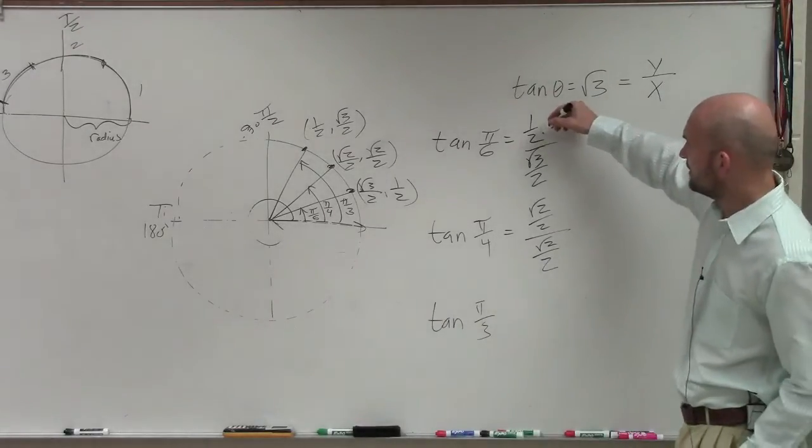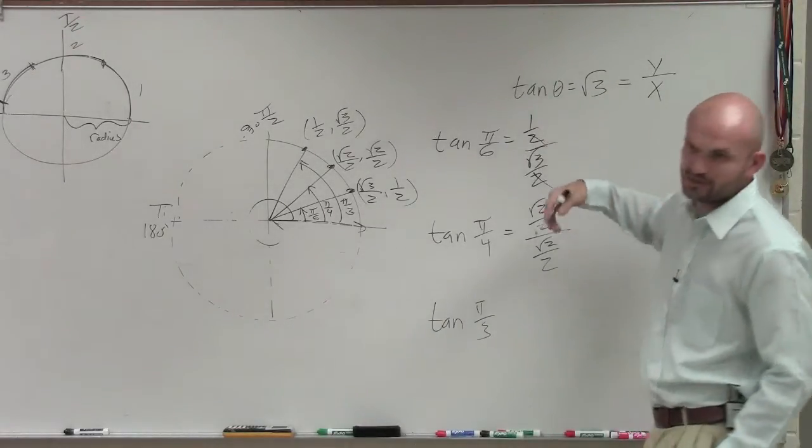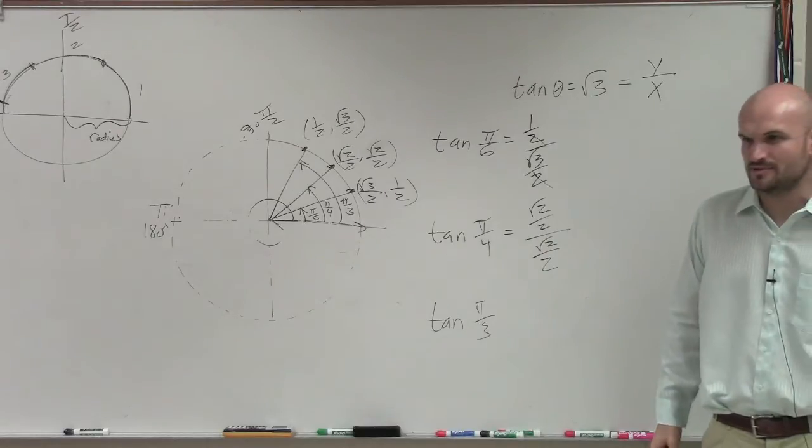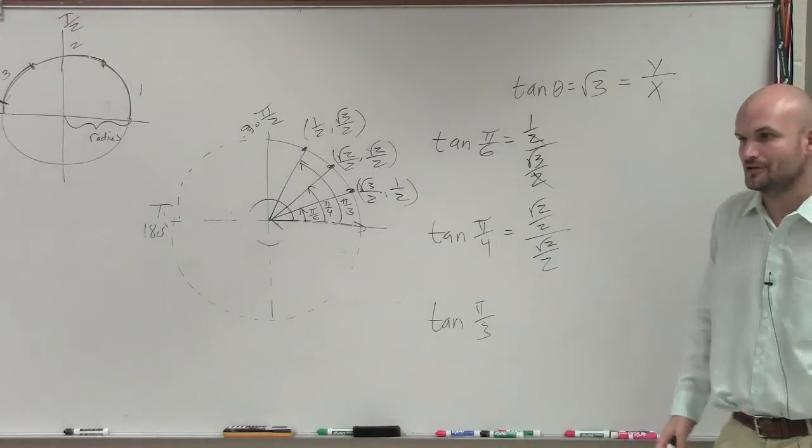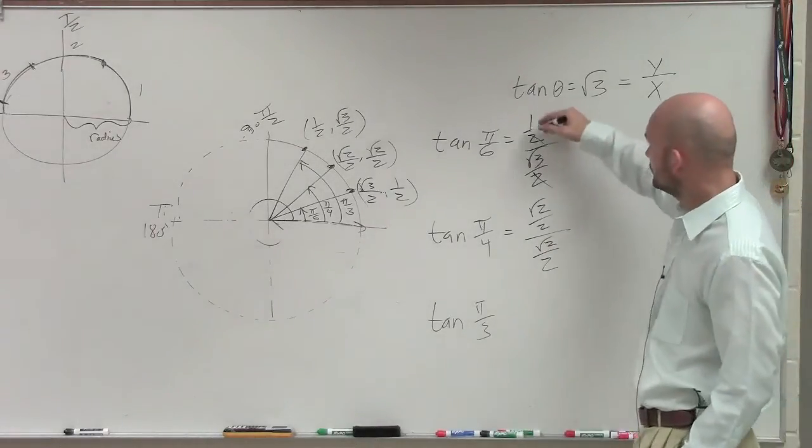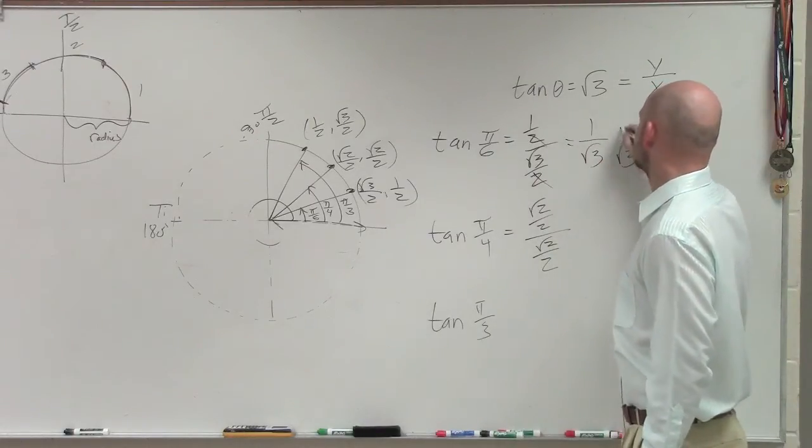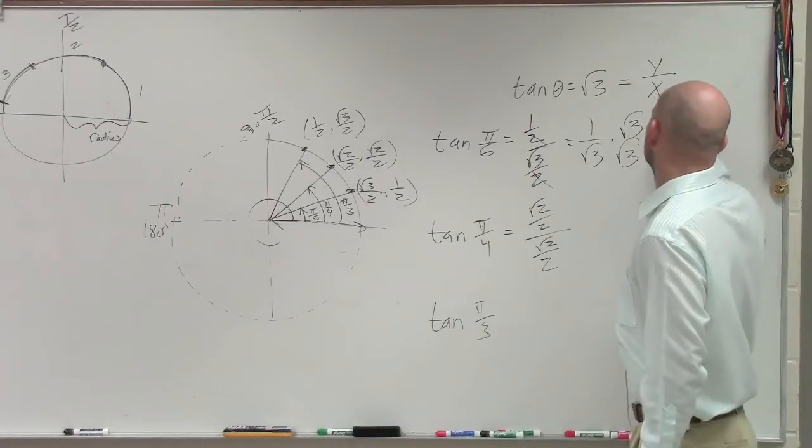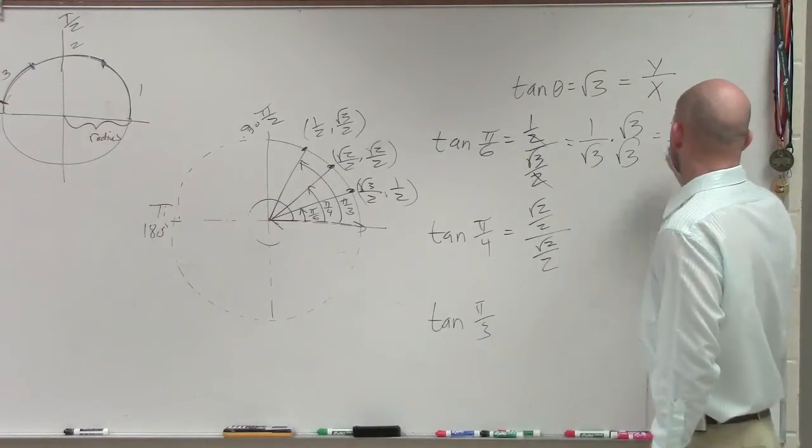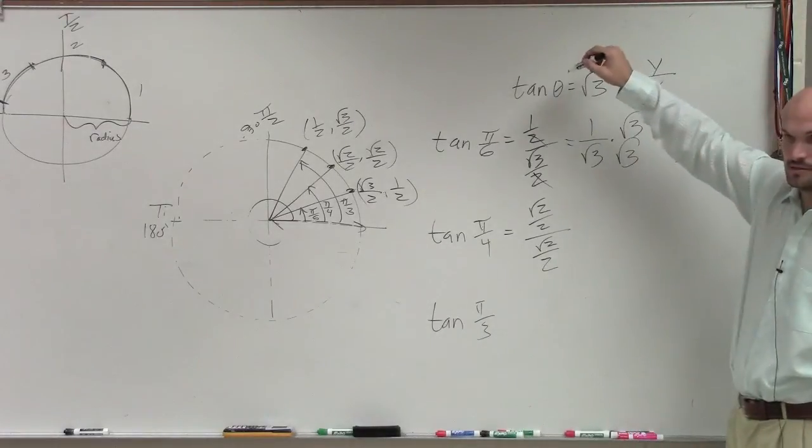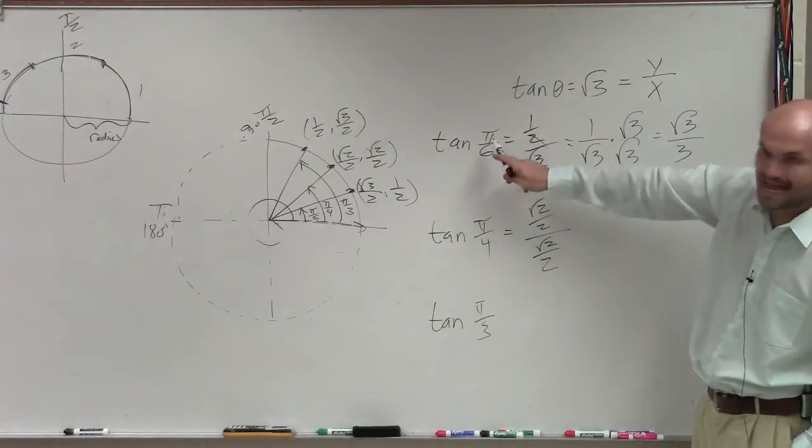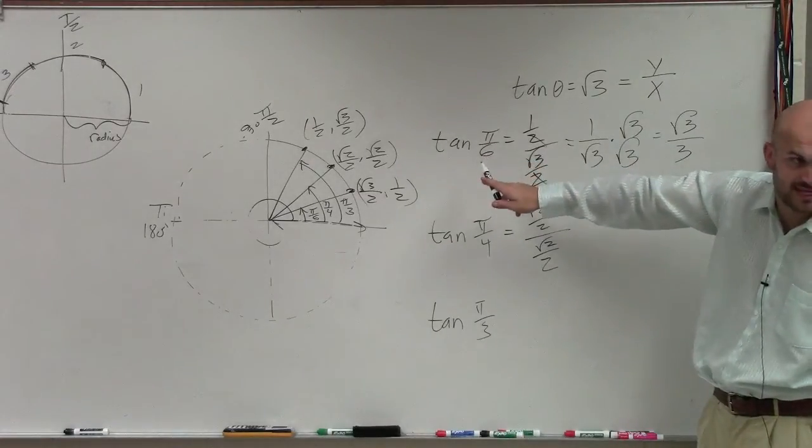So let's simplify these. Well, if I simplify these, the 2's, remember, you guys want me to multiply by all the reciprocals? I can do it simpler? OK. So here, the 2's cancel out. So I'm left with 1 over square root of 3. Rationalize the denominator. Square root of 3 over 3. Is that my answer? No. So therefore, this angle, π/6, is not going to be the angle.